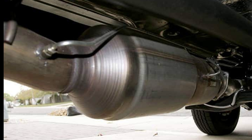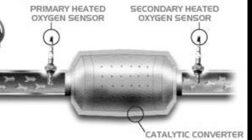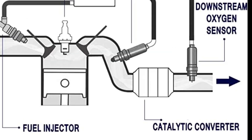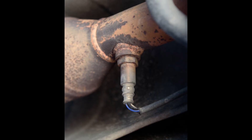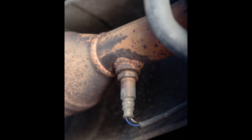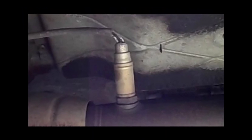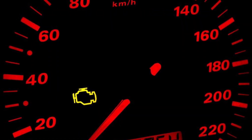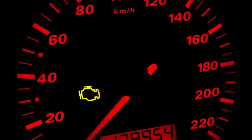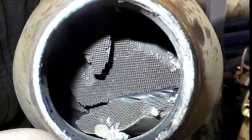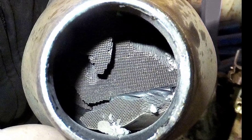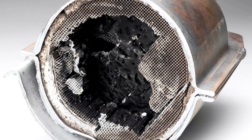Modern vehicles have oxygen sensors located before and after the catalytic converter, which measure the efficiency of the converter by monitoring the levels of oxygen in the exhaust gases. If the sensors detect that the levels of oxygen after the catalytic converter are too high, it can indicate that the converter is not doing its job properly. If the oxygen sensor detects a decrease in efficiency or a malfunction in the catalytic converter, it can cause the check engine light to turn on. Common causes of catalytic converter failure include damage from overheating, contamination from engine oil or coolant, or physical damage from road debris.